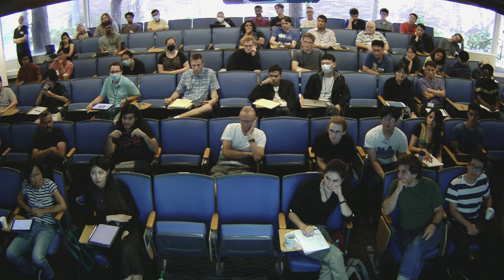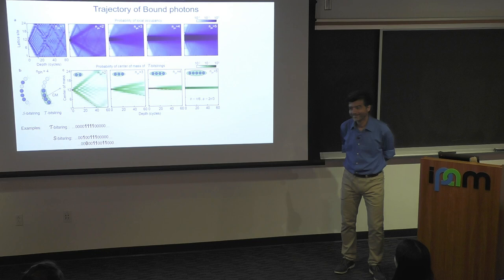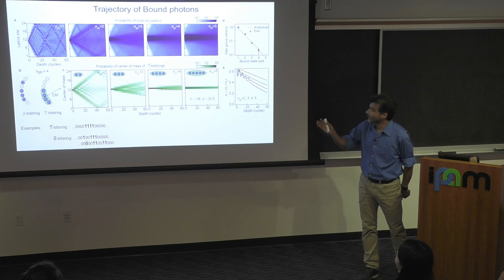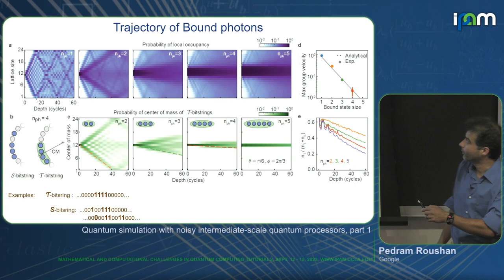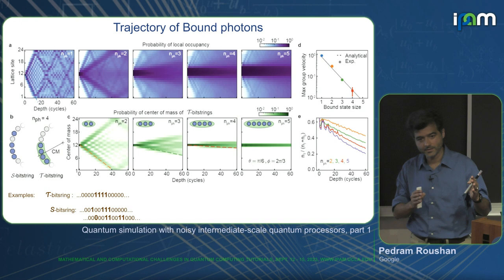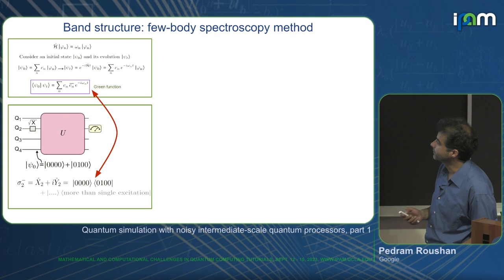I can draw a line showing propagation of the front and extract the velocity of how the front propagates. The extracted velocity matches what Igor Aleiner predicted — shown as a solid line. That's the extracted velocity of propagation of the front.